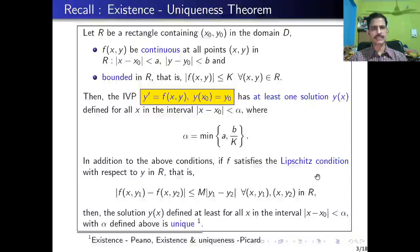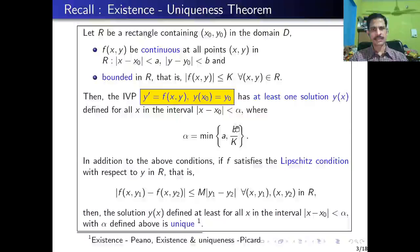Then the initial value problem y' = f with initial condition y(x₀) = y₀ has at least one solution y(x) defined for all x in the interval |x - x₀| < α, where α = min(a, b/k). Here a and b come from the dimensions of the rectangle R, and k is the bound for f. This condition ensures the existence of a solution of the initial value problem for the first-order ODE.